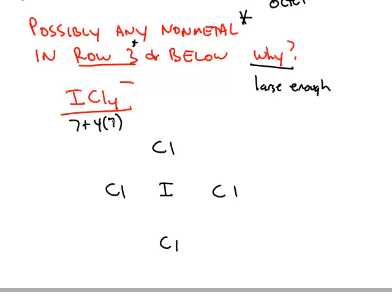Number of valence electrons: iodine has seven, each chlorine has seven, and then the negative one charge we have to add one electron, so that's going to be a total of 36 valence electrons.